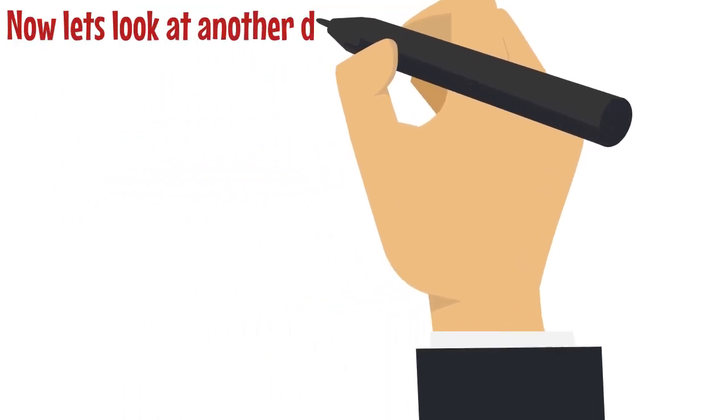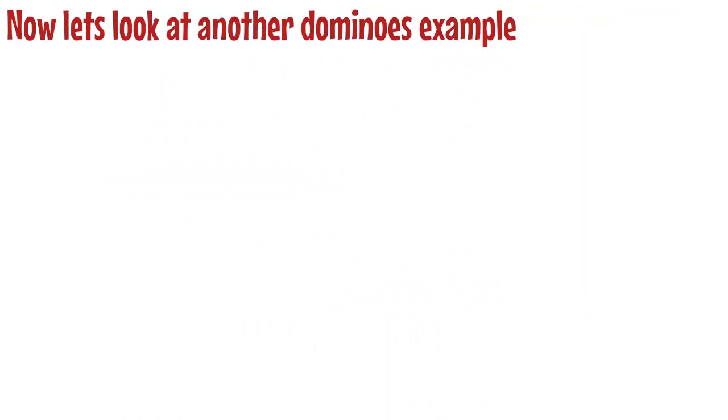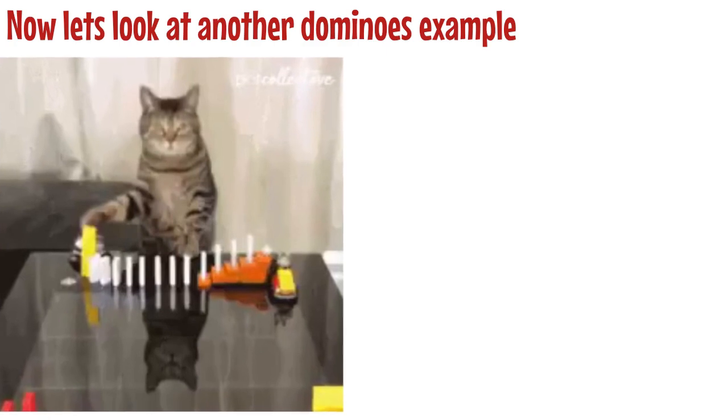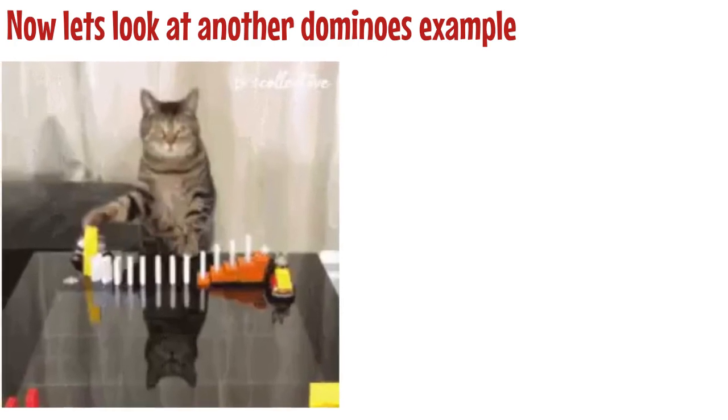Now let's look at another dominoes example and try to understand the concept of RCA. Carefully watch this video and together we will perform the RCA to see why the green flag raised at the end of this video.